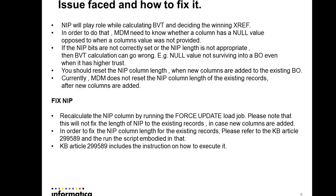If the NIP bits are not correctly set — for example, a null value is present but marked as 0 — or if the NIP length is incorrect, the BVT calculation can go wrong. This means the value that should win will not survive and the wrong value can win. For instance, if Allow Null Update is checked for a source system and null has the highest trust over a not-null column, you may still see the not-null value winning, which is incorrect.